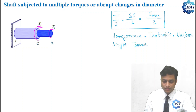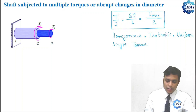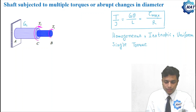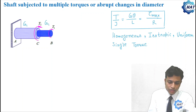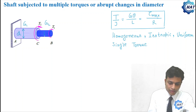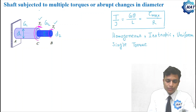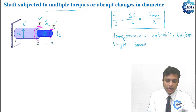In practical situations, there may be a compound shaft made of different materials. Here, AC is made of a material with shear modulus G1 and CB has shear modulus G2. Diameter of AC is D1 and diameter of CB is D2. The compound shaft is subjected to two twisting moments T1 and T2. In practice, shafts may be subjected to multiple torques and there may be abrupt changes in diameter.